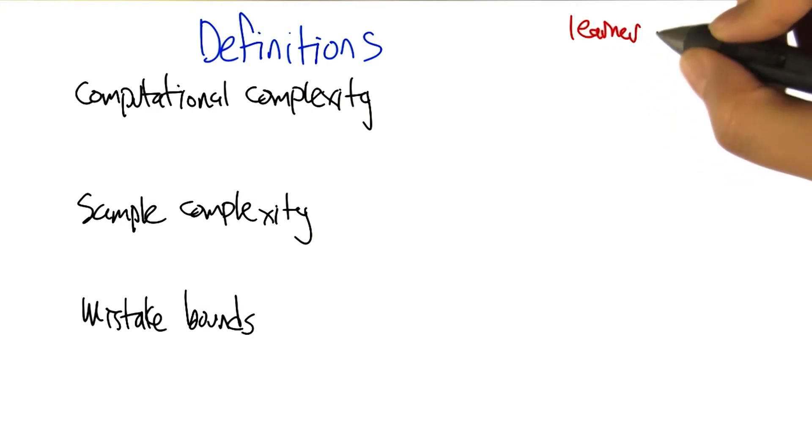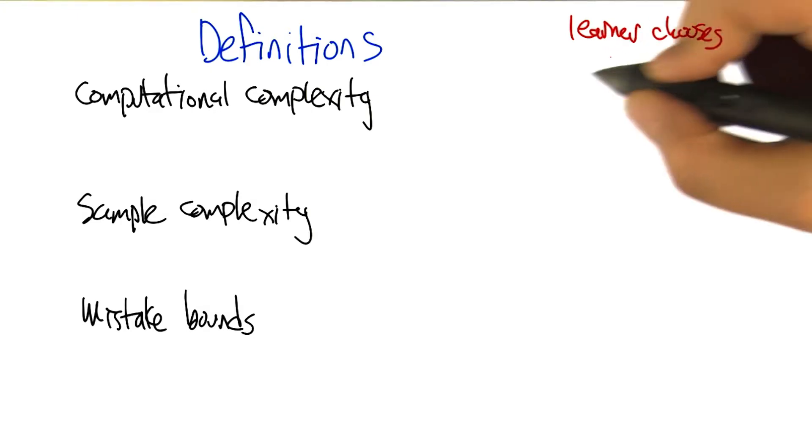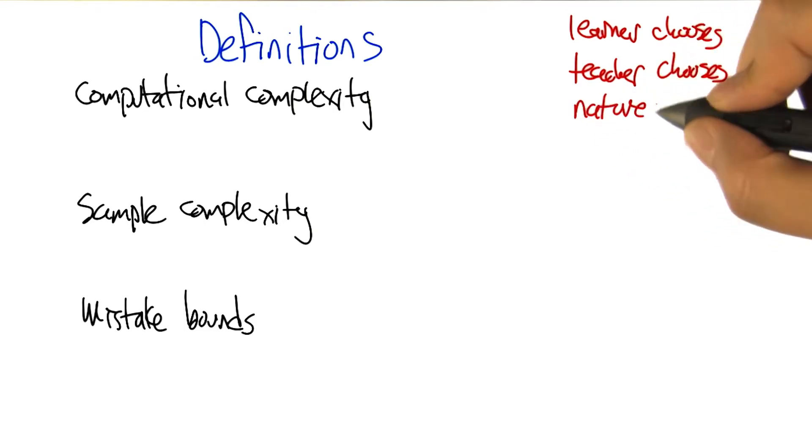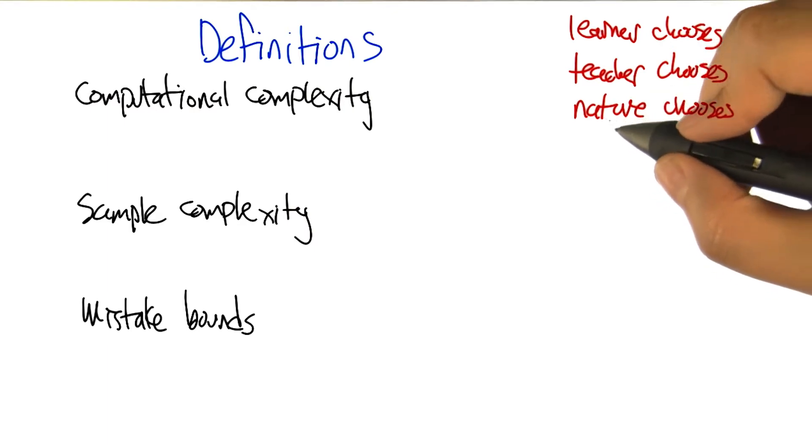So the learner chooses examples. The teacher, hopefully a nice one, chooses examples. And then there was the case where the examples are given to us by nature. And I guess there was a fourth one which is that a mean teacher gives it to us.